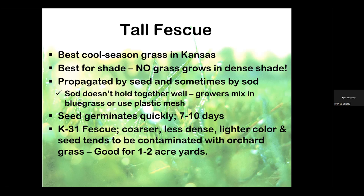Kentucky 31 is the fescue I grew up with — it's coarser in texture, less dense, sometimes lighter in color, and can be contaminated with orchard grass, which is a tough weed that's hard to remove. Remember, it's almost impossible to take a grass out of a grass unless you can hand-pull it or use glyphosate, which kills desirable grass too. If I lived on acreage, Kentucky 31 would be my choice — it's more drought tolerant. The downside is the coarser texture, so people don't like to walk on it barefoot.